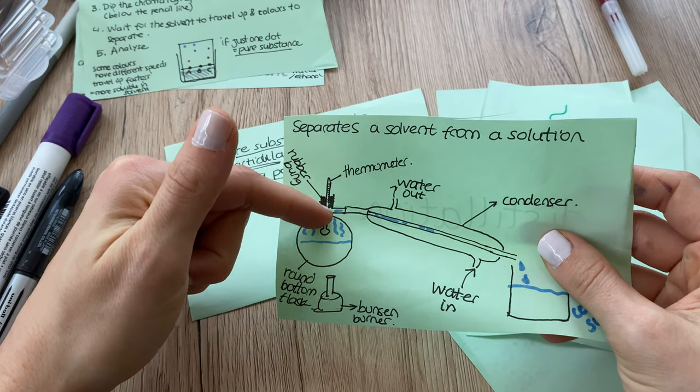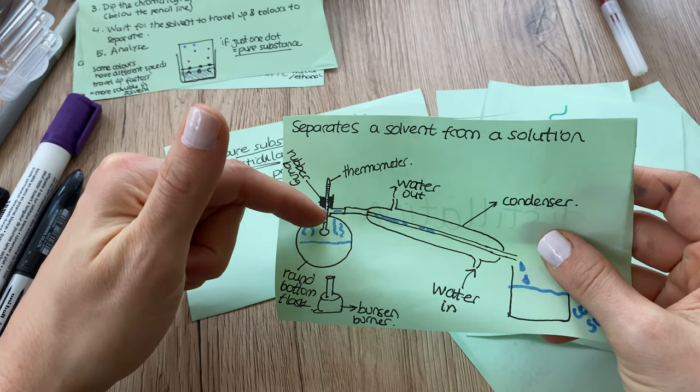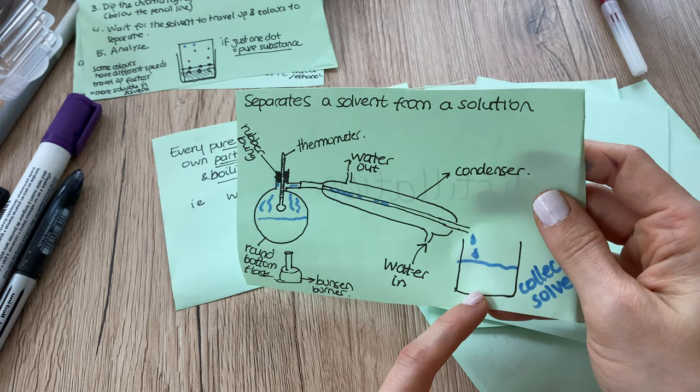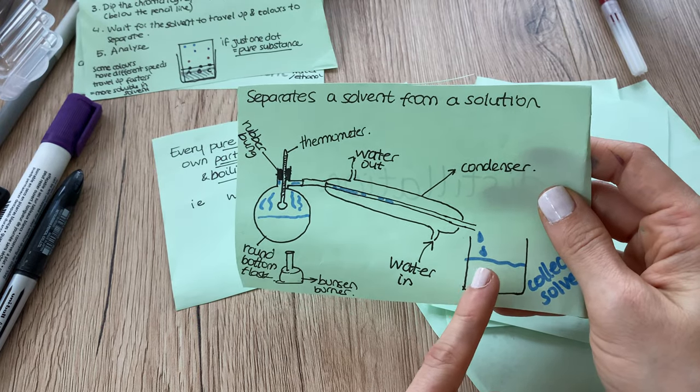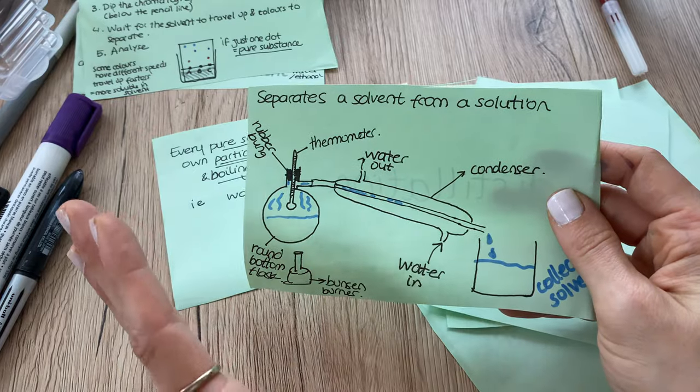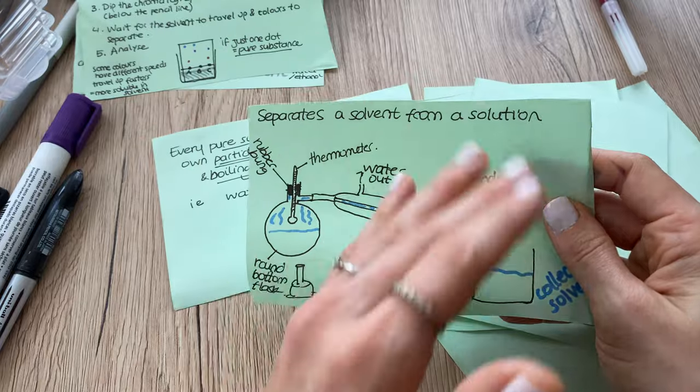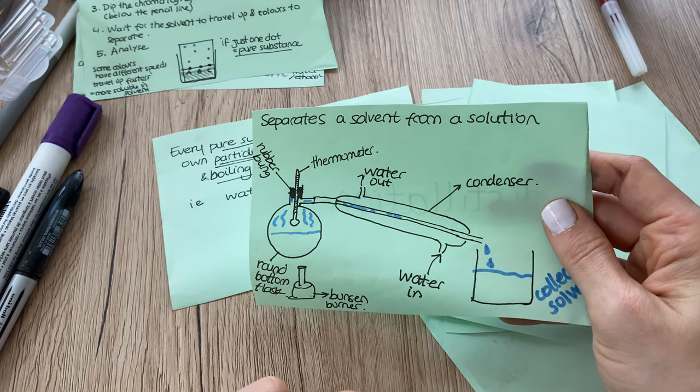At 78 degrees you're going to see that you're going to have your liquid collected here and you know that this liquid cannot be water because the temperature hasn't got to 100 degrees Celsius yet and we call this fractional distillation.